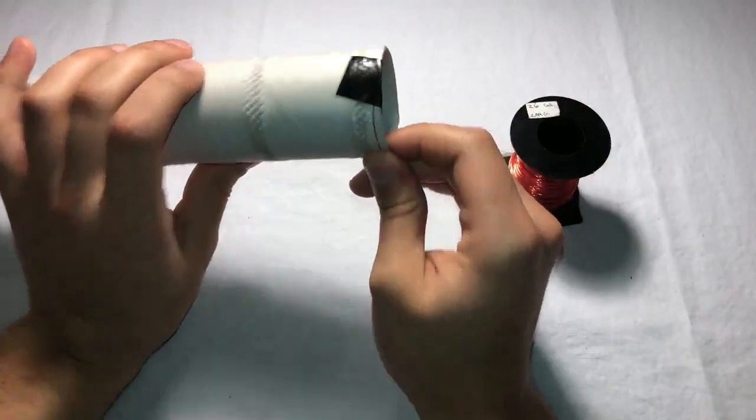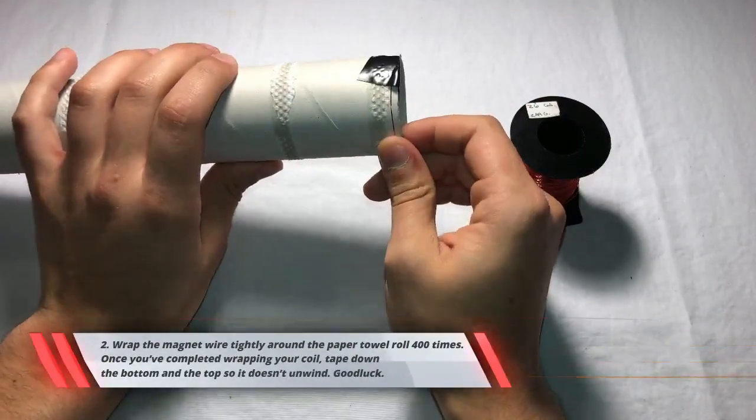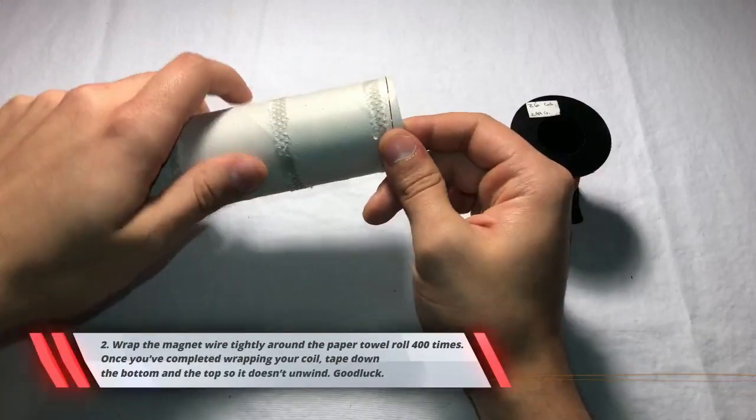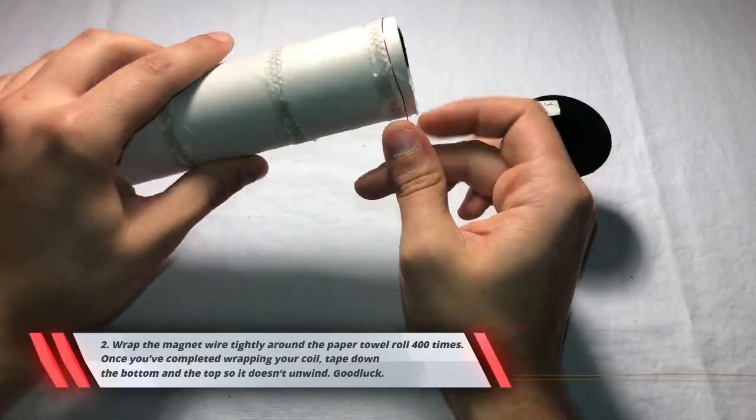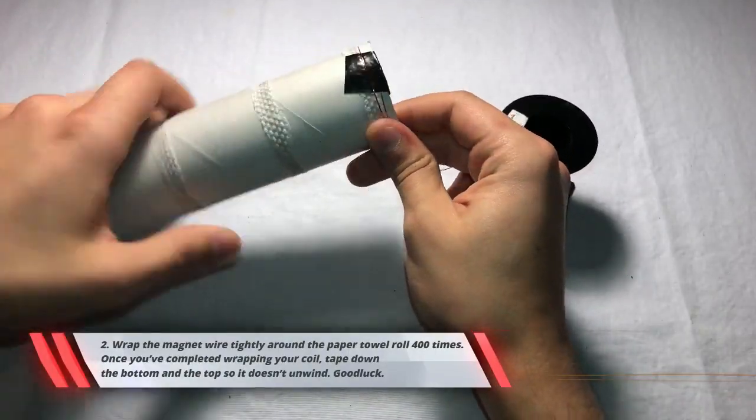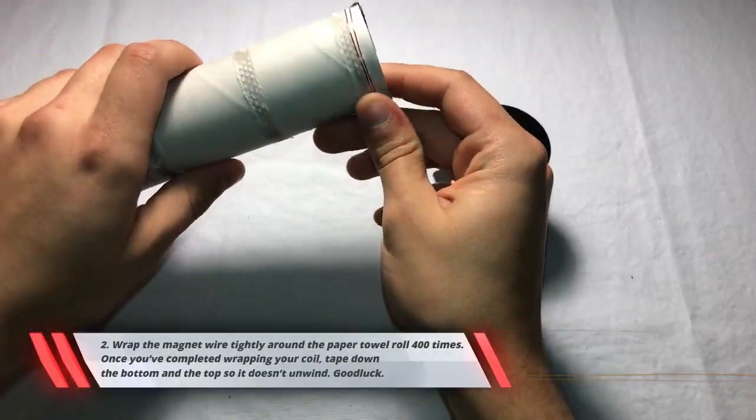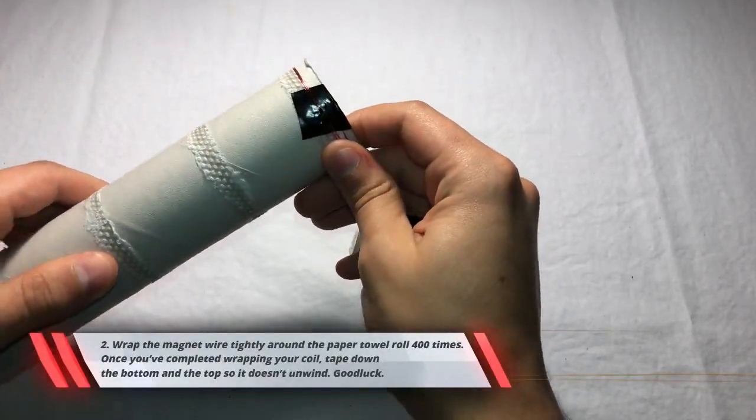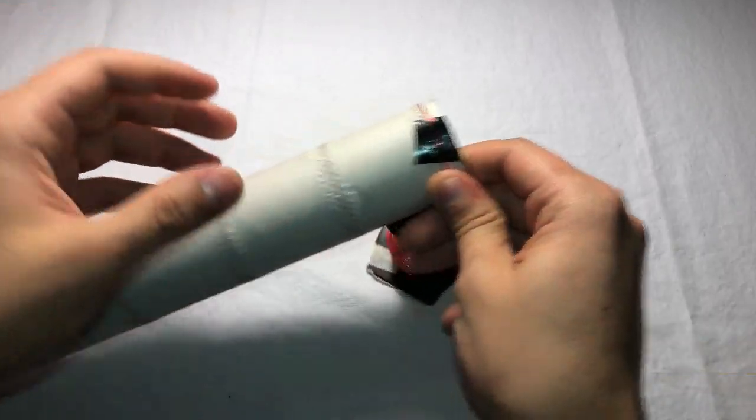And now we're going to begin our 400 turns. Remember to keep all turns tight and side by side. And now we're just going to start winding. There we go one turn, two turns, and so forth. You get the idea.